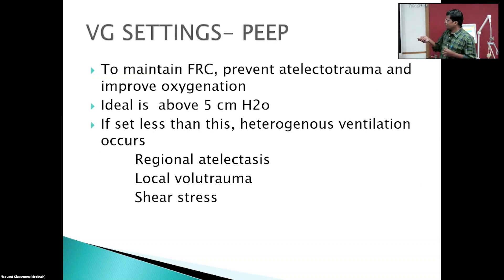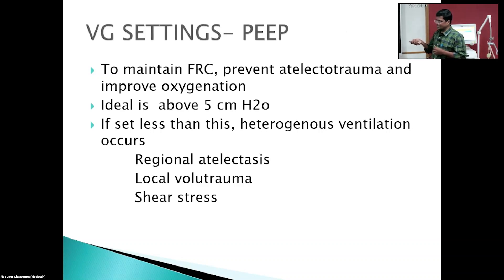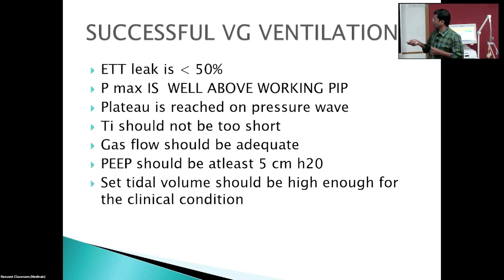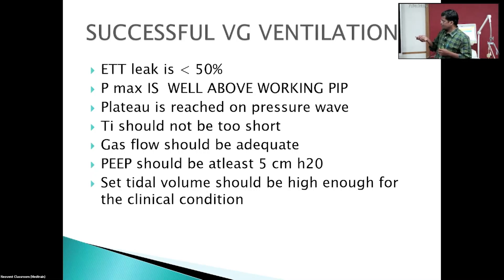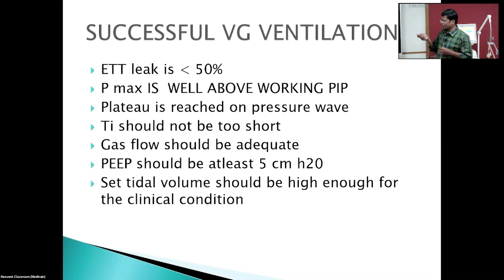PEEP is used to maintain FRC; the ideal PEEP is 5 cmH₂O. If set lower, regional atelectasis and shearing stress trauma may result. For successful ventilation, Ti should be appropriate, gas flow should be adequate, PEEP should be optimal, and there should be a small plateau visible on the pressure waveform.